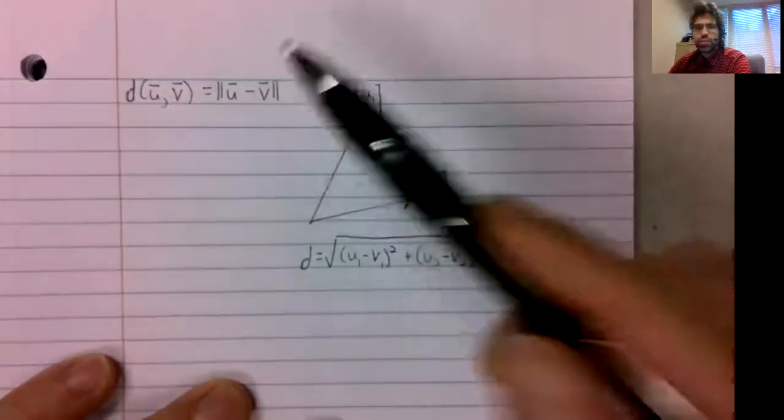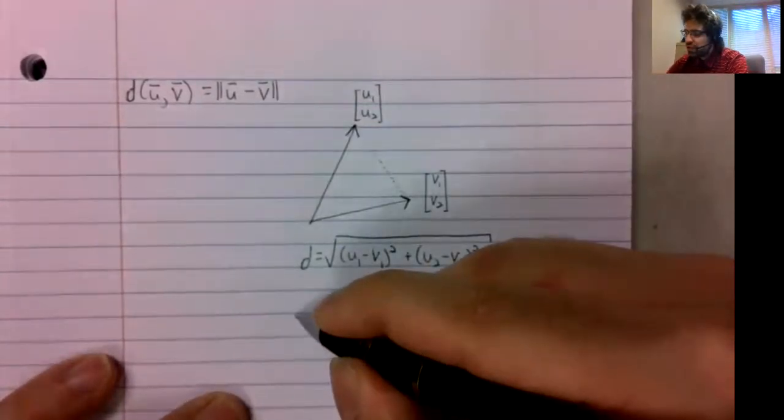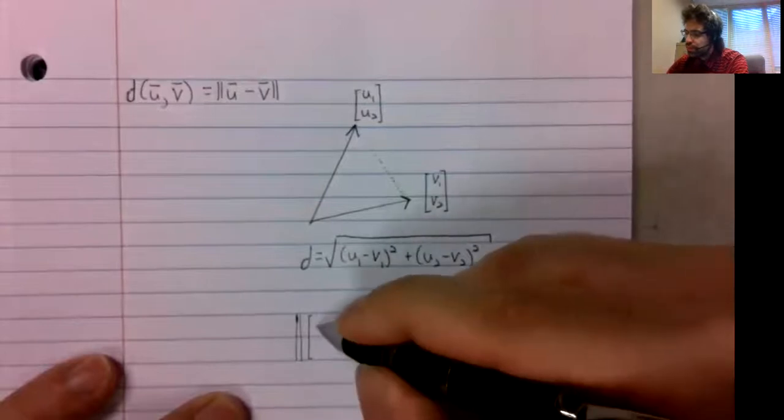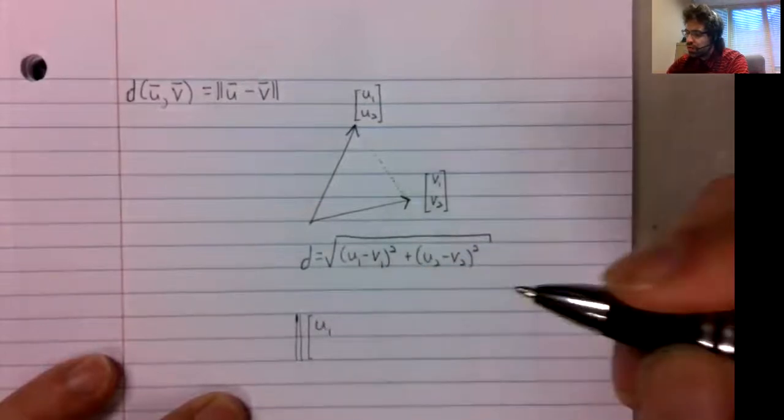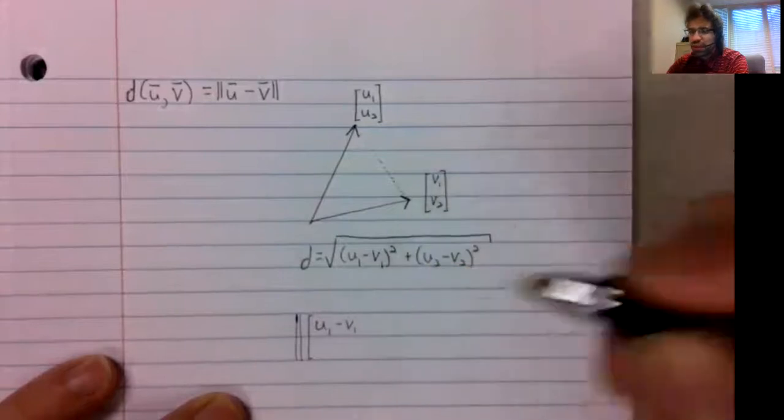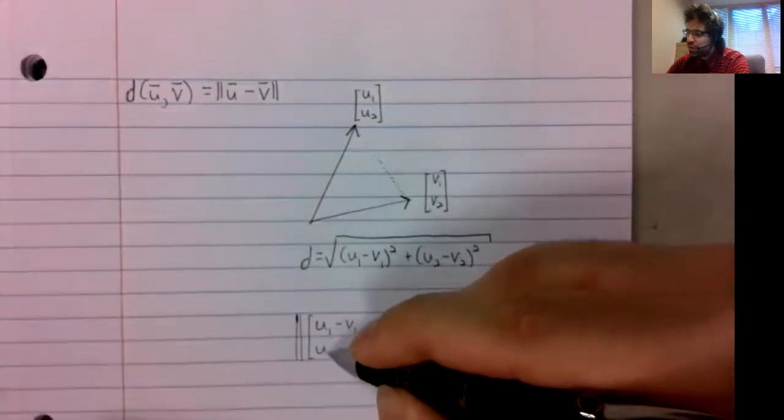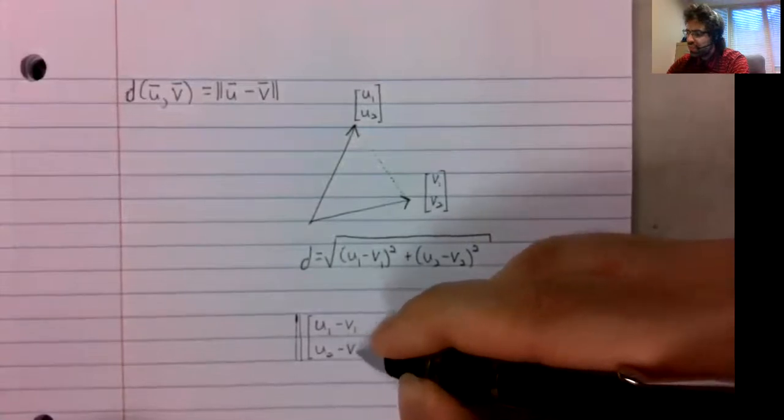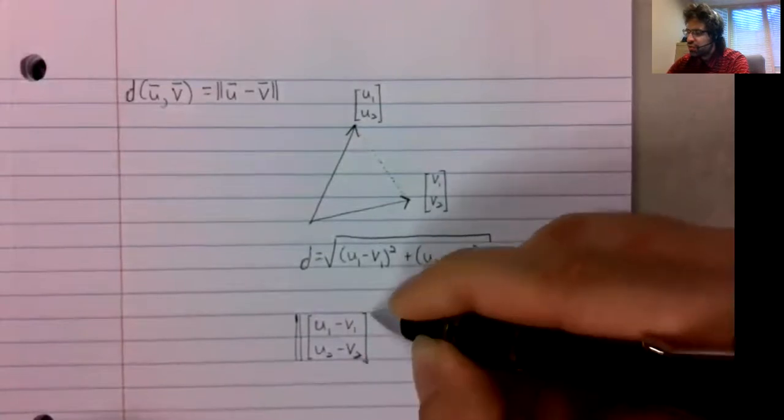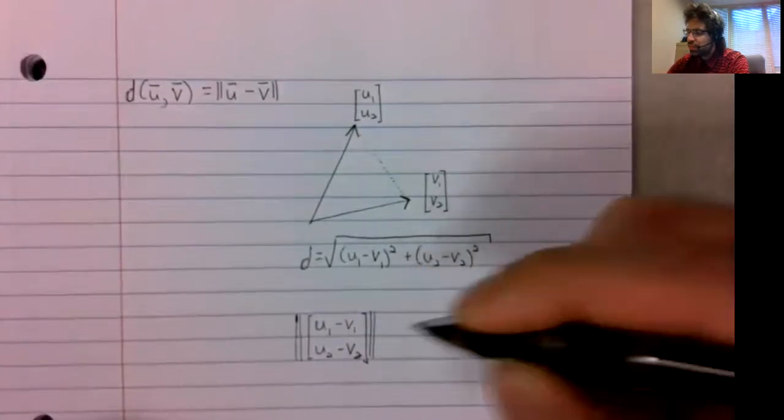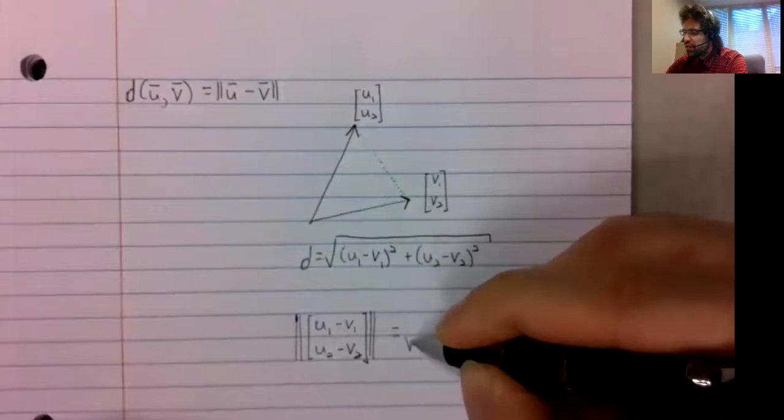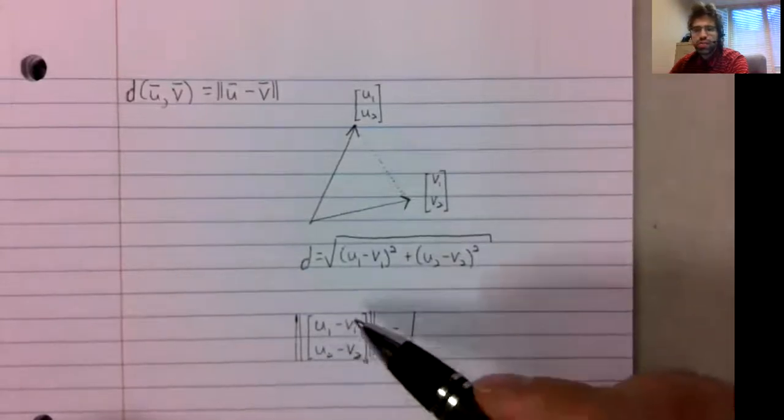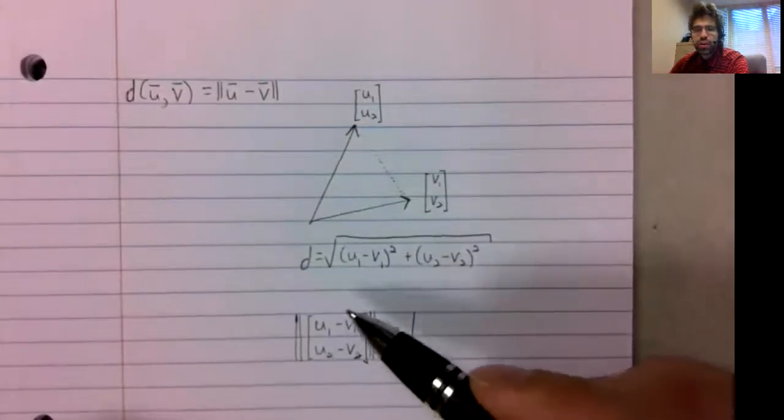And using the definition, the norm of u1 minus v1, u2 minus v2 is the square root of the dot product of this vector with itself.